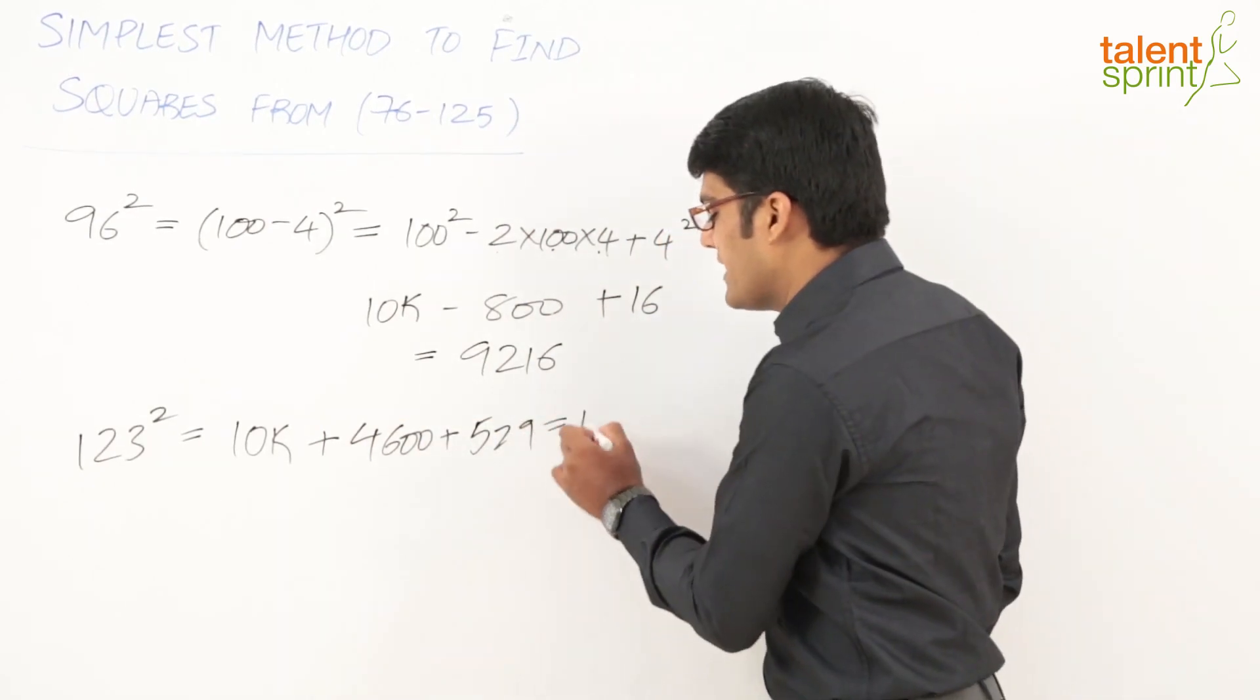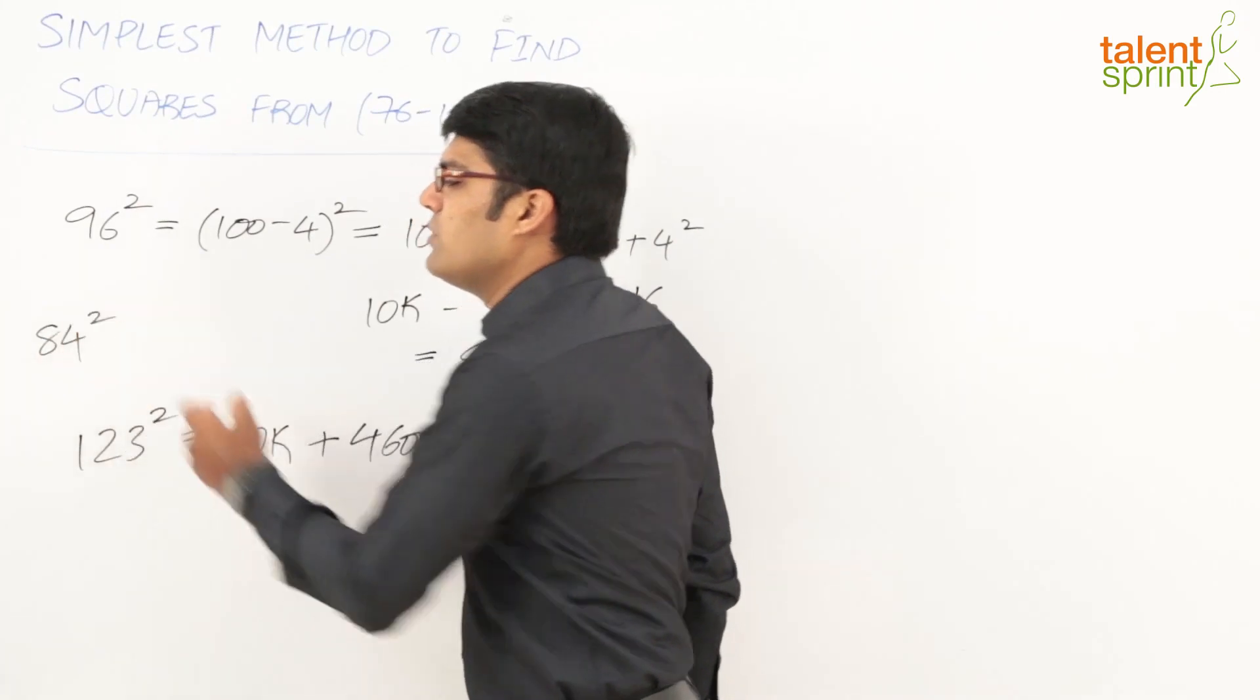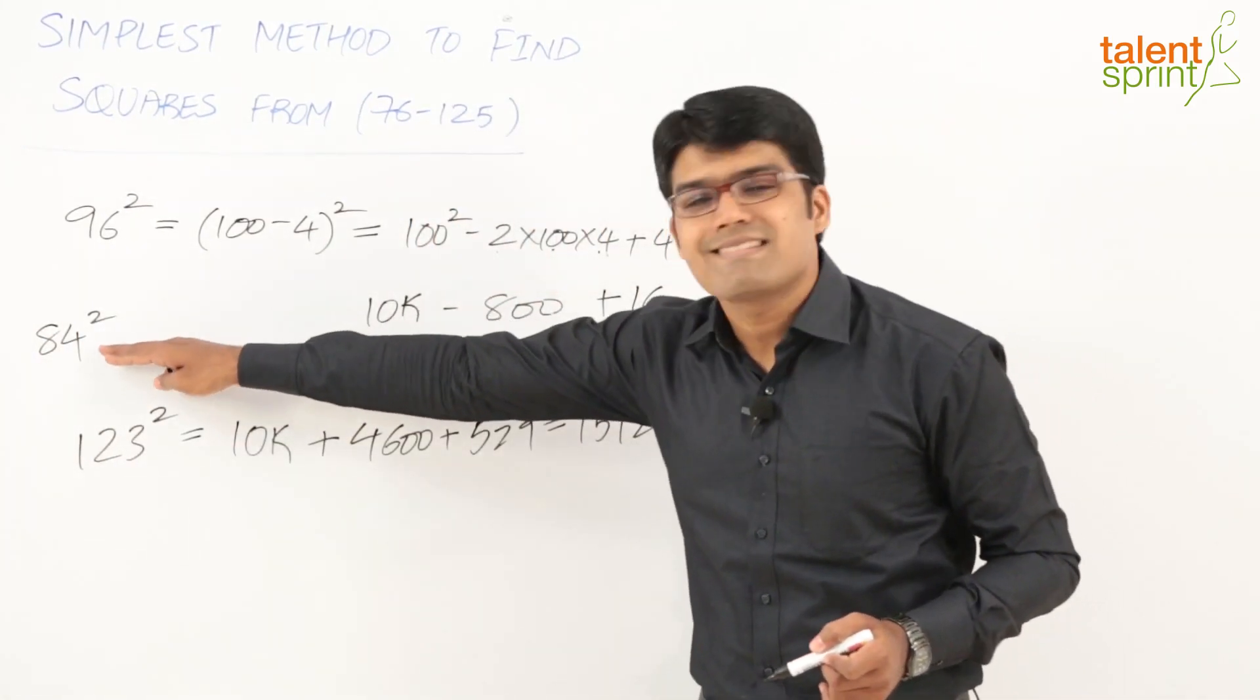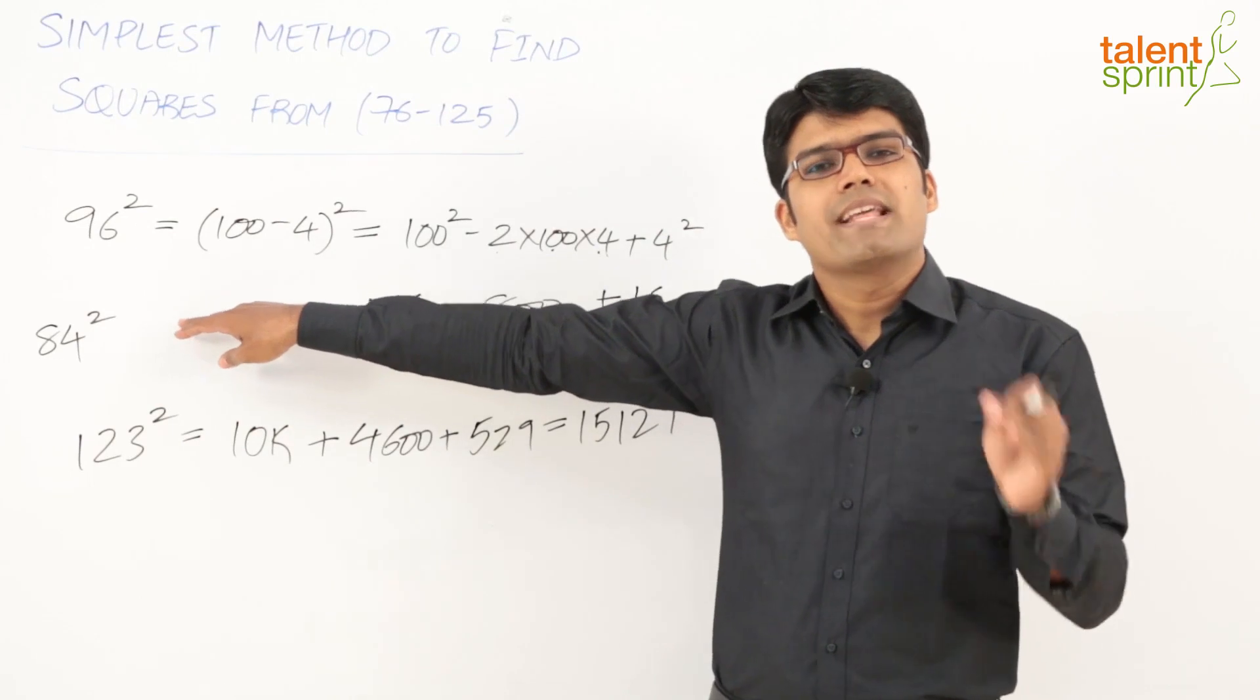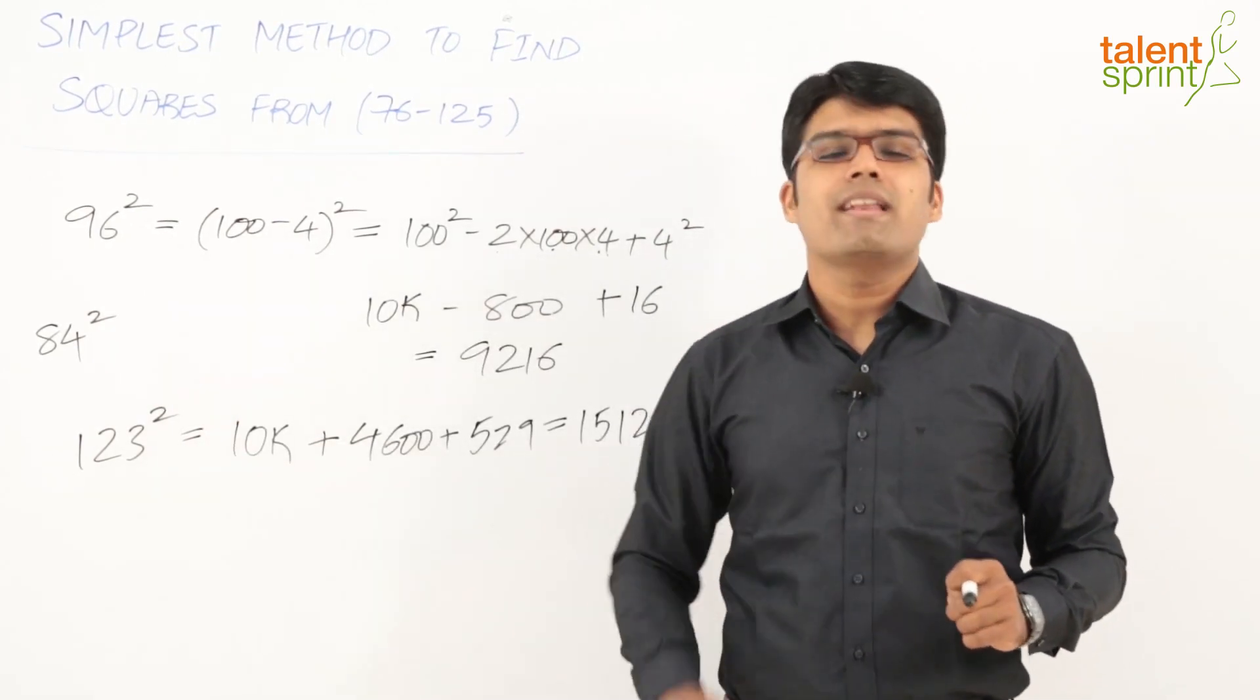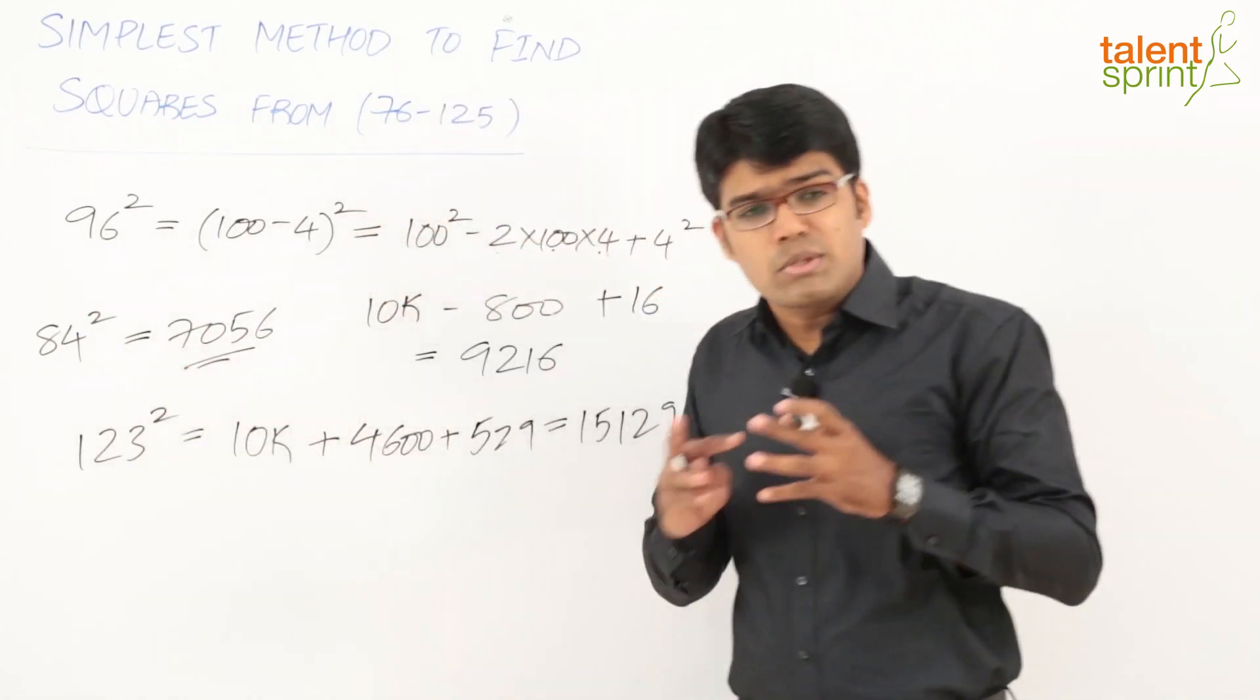Let's say we need to get 84². What do we do? 10,000 - 3,200. This is 100 - 16, so 10,000 minus 16 doubled (-32×100). 10,000 - 3,200 = 6,800 + 16² = 256. So as you can see, with a little practice on this technique, you'll be able to get the square without having to write anything on paper. You just do the calculation mentally in about 3 seconds.